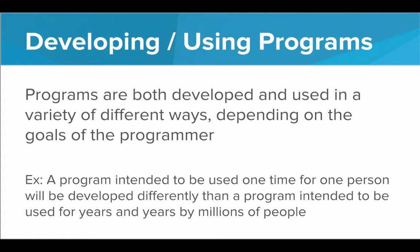So how are programs developed and used? They're developed and used in a variety of different ways depending on the intended purpose and the goals of the programmer. If you're writing a program only intended to be used one time just for yourself, you'll probably develop it very differently than if you're writing a program that will be used for years by millions of people. In the second case, you'll have a team working together, ensuring the code is clear, readable, and able to function for years to come.